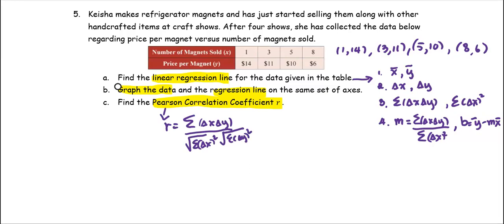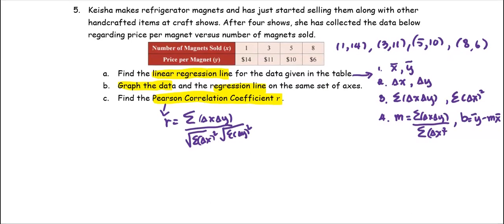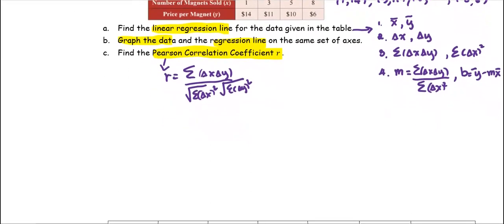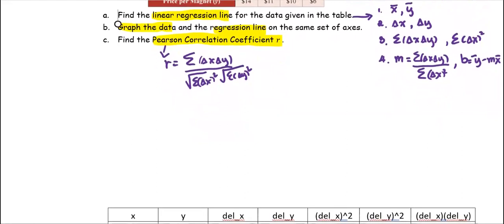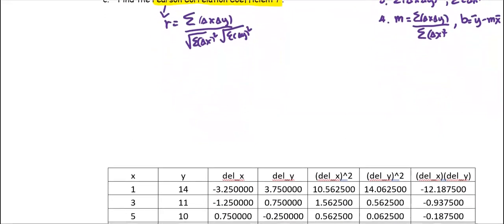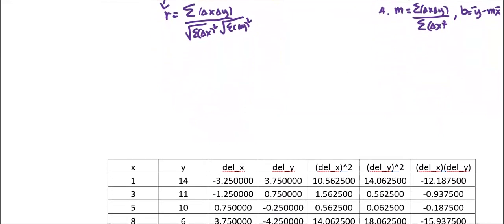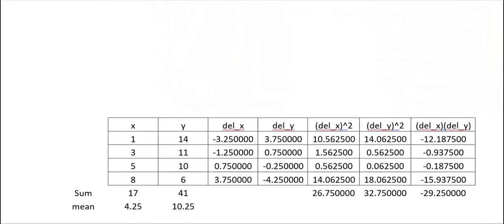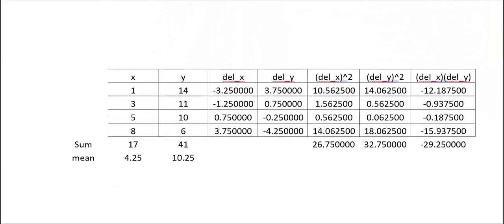To keep it in an organized and systematic way, we're going to generate the table again. So we're going to form the table with the x and y values, and then compute the delta x, delta y, delta x squared, delta y squared, and delta x delta y columns that you see on the screen here.